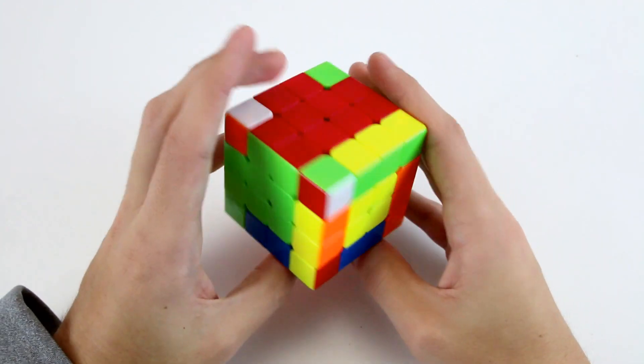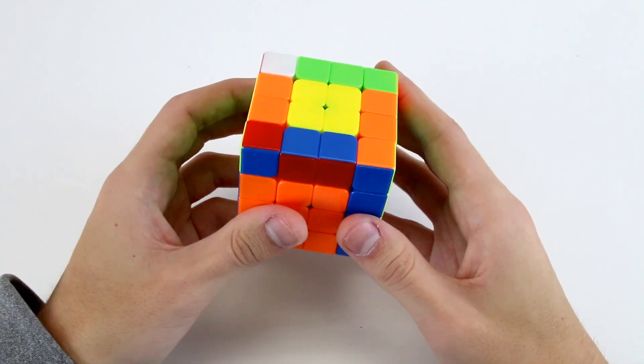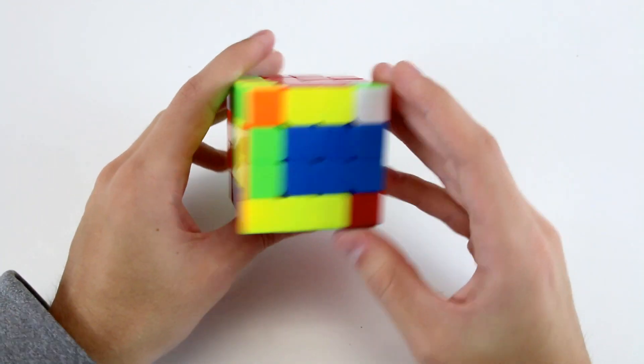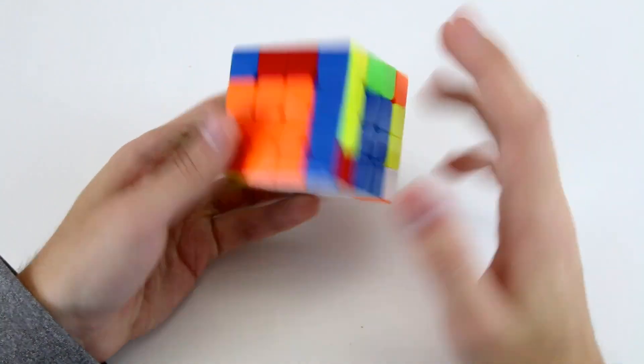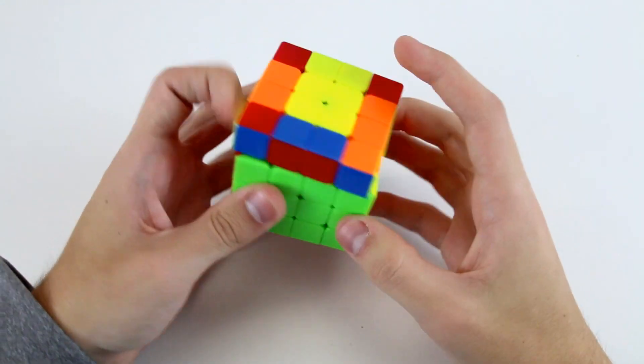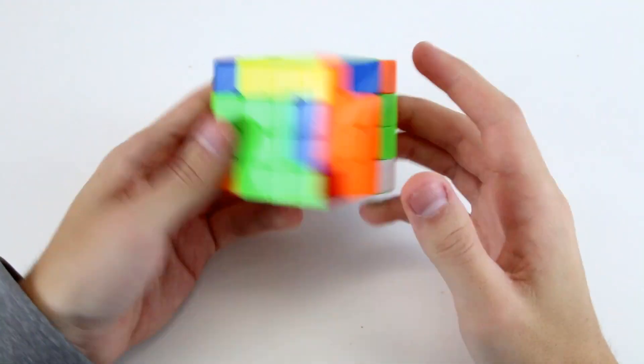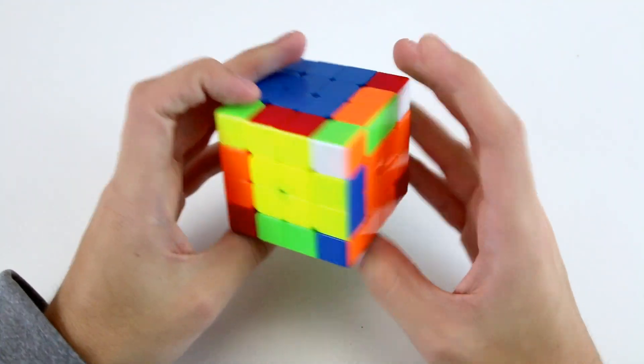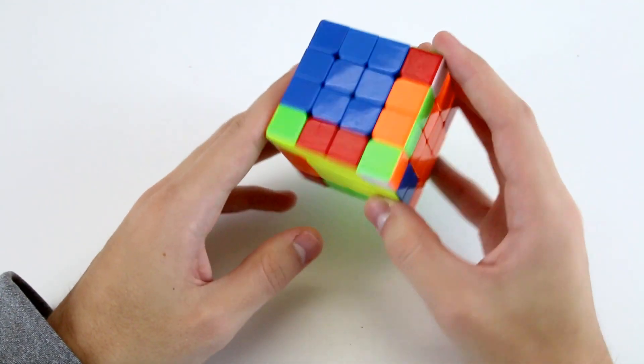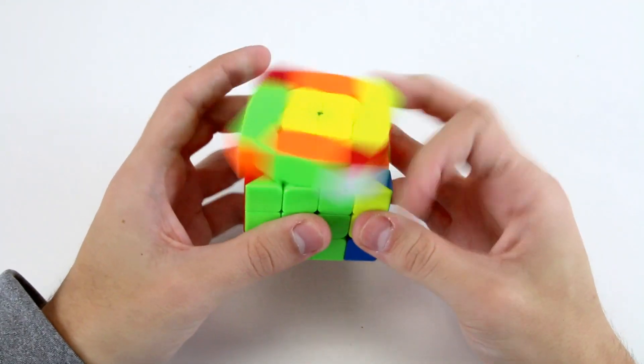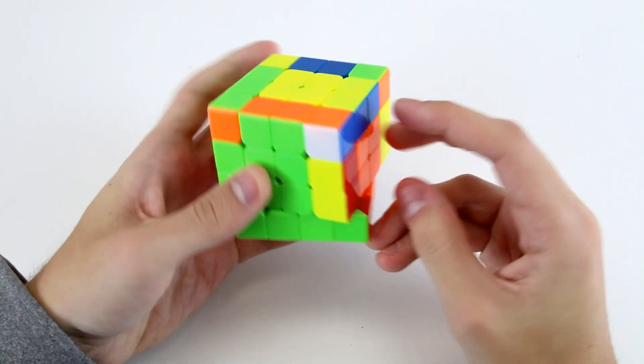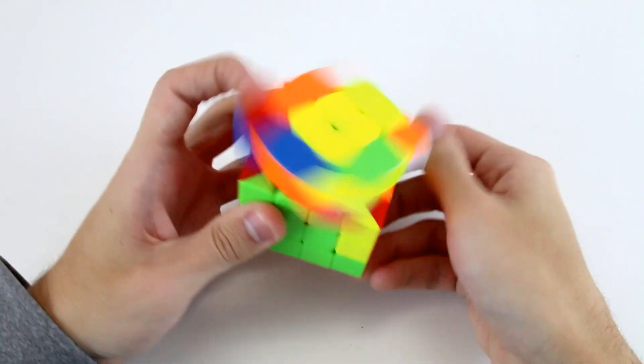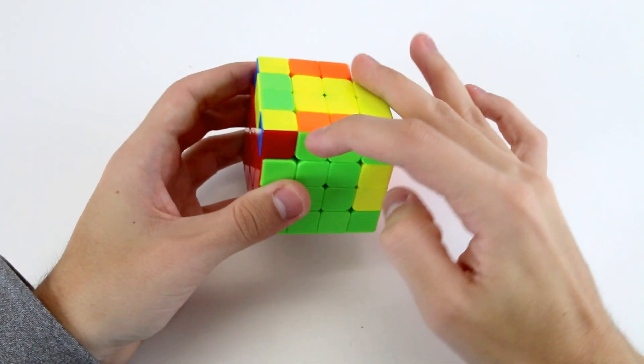So now the first F2L pair is not very nice at all. I kind of think... I imagine I would see this first in a solve, these two, which I can solve like that. Then again, we don't have a very good case. Maybe we could do something like R prime U2 R, then keyhole this one, then these two, and then these two.